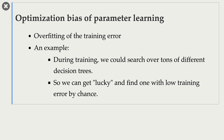We have talked about optimization bias of parameter learning before — that is, overfitting of the training error. For example, suppose you are training a decision tree classifier on a limited amount of training data. During training, you are learning the parameters, and during this process you could search over tons of different decision trees. You might get lucky and find a tree that works really well on the training data, but it doesn't generalize well on the validation data or the test data — and that is overfitting of the training error.